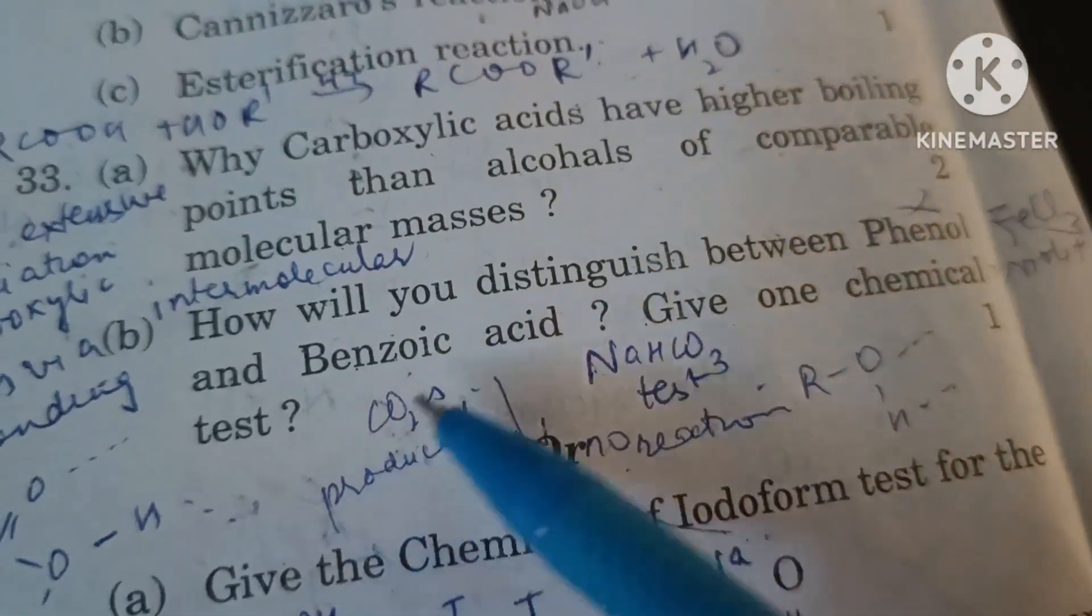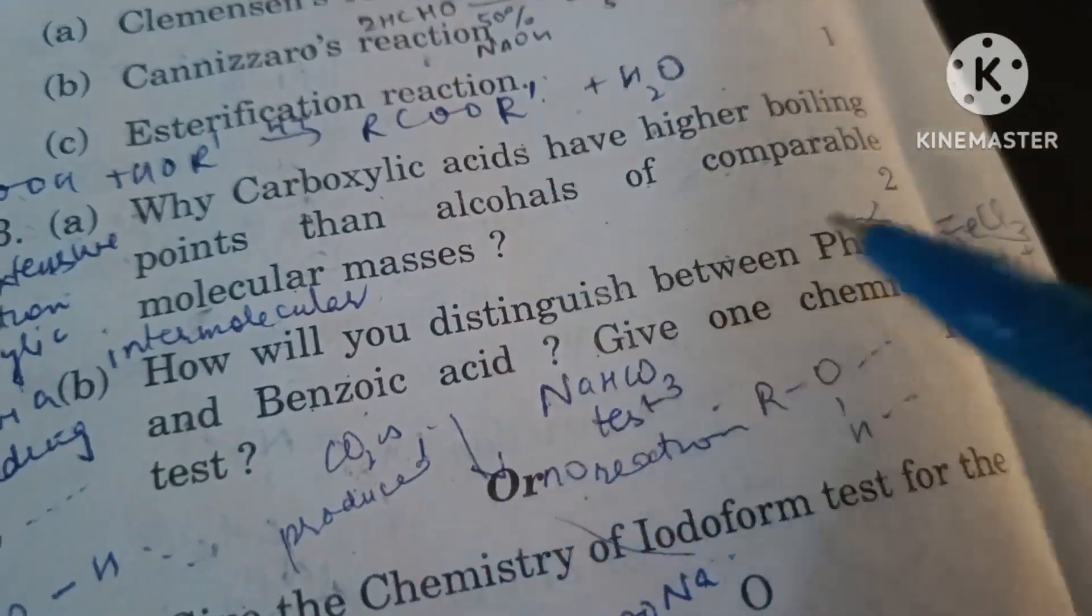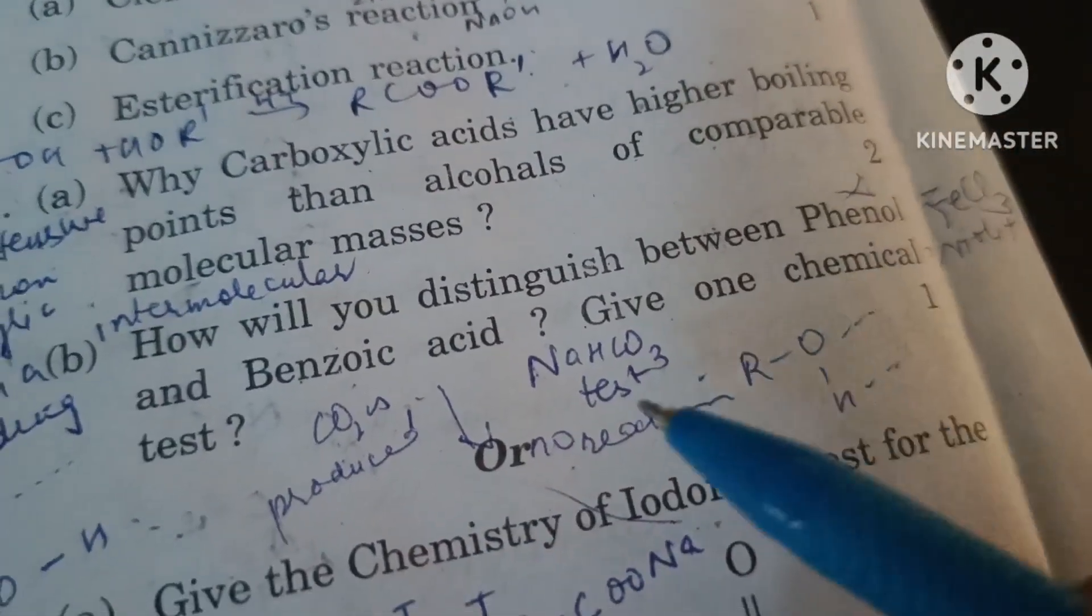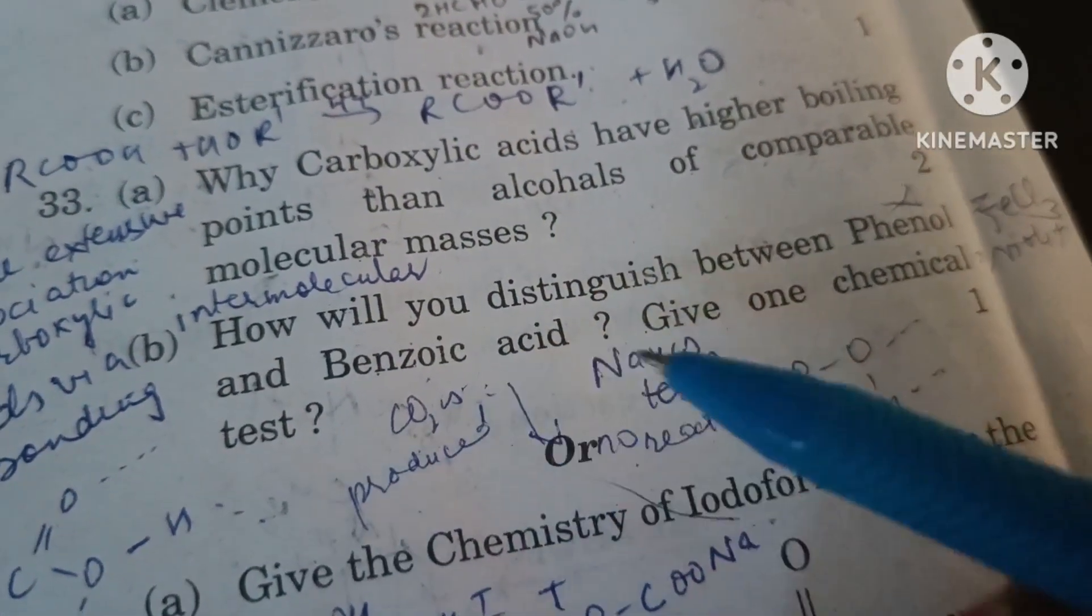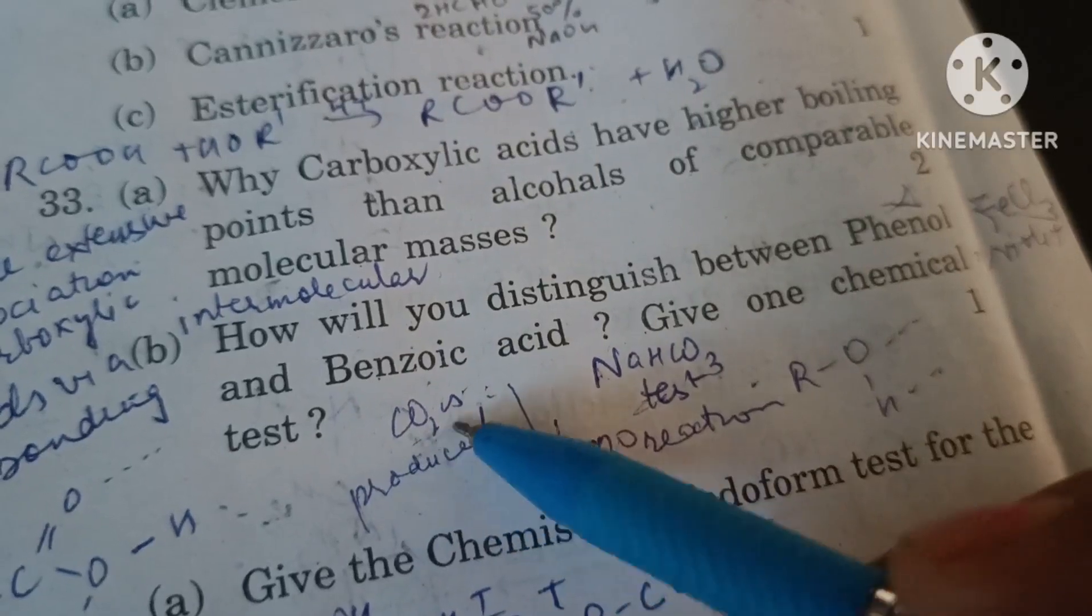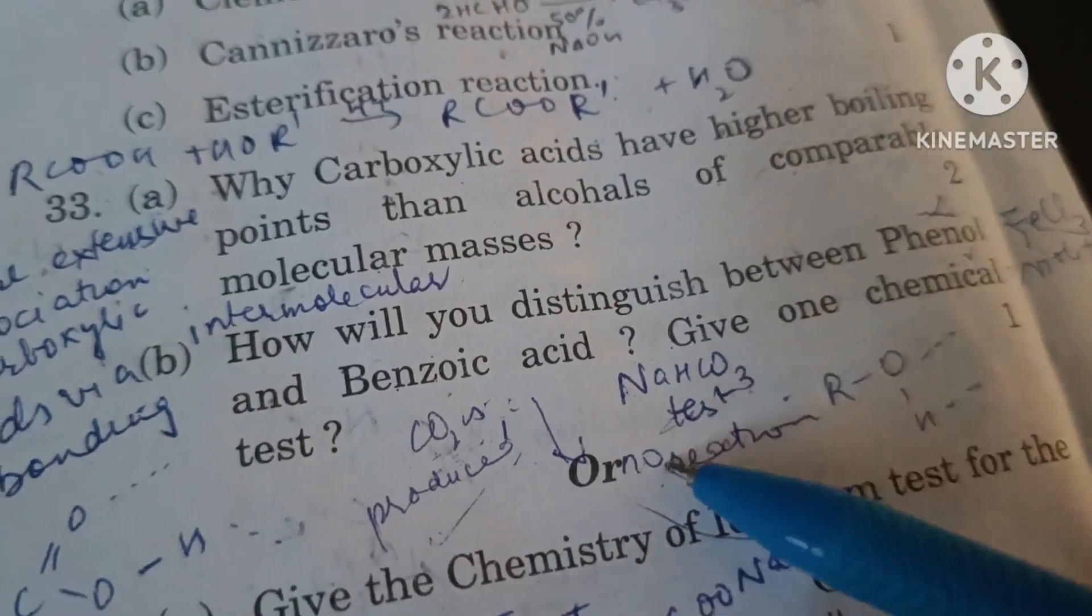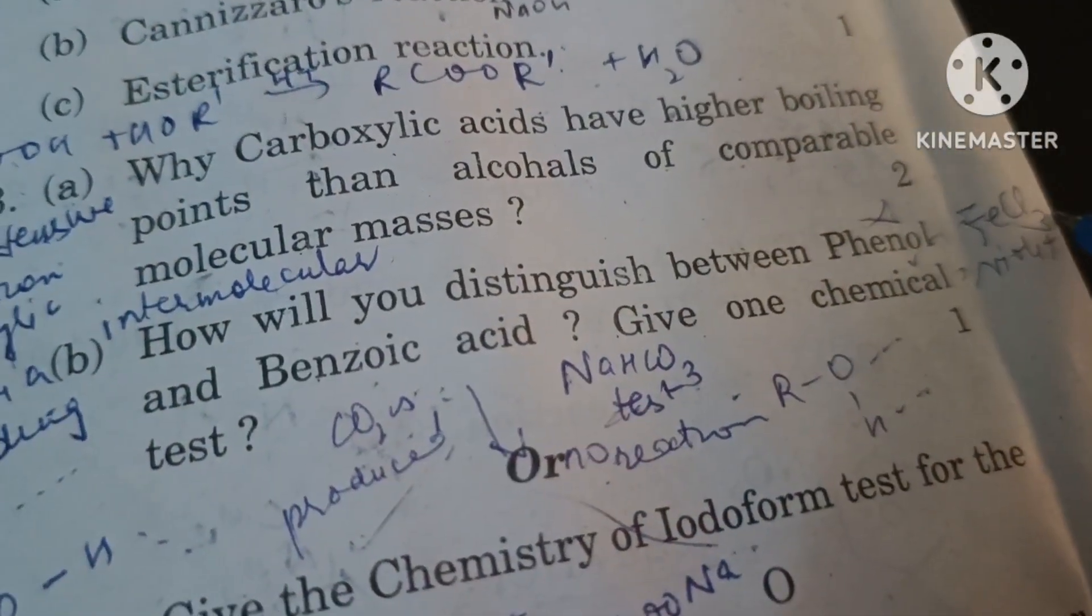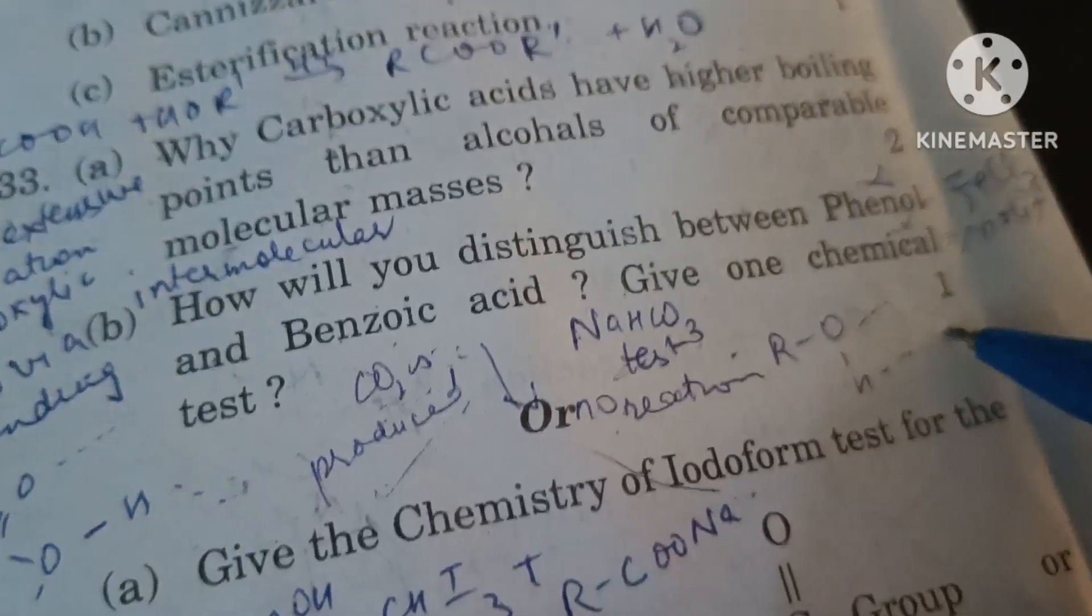How will you distinguish between phenol and benzoic acid? Give one chemical test. We can distinguish by reacting it with sodium bicarbonate. Benzoic acid reacts with sodium bicarbonate to produce carbon dioxide along with effervescence. Phenol does not give this test. Similarly, if we react phenol with ferric chloride it gives a violet coloration. Benzoic acid does not give this test.